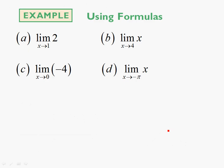How does that work? Well, the first one is a constant — two. So this one says you're always worth two. So when you approach one, what will you be worth? Two. And this function is negative four. So when you approach zero, what will you be worth? Negative four.